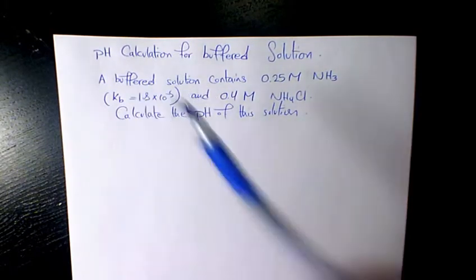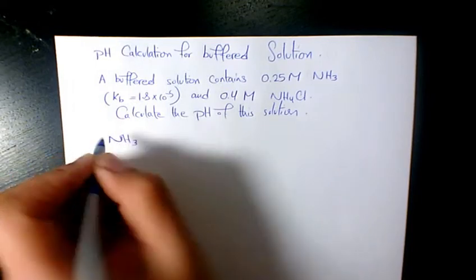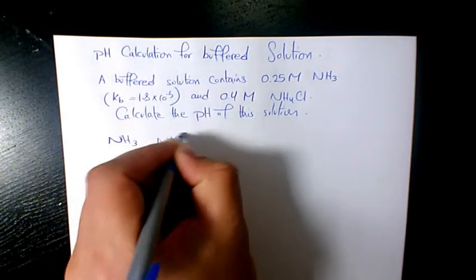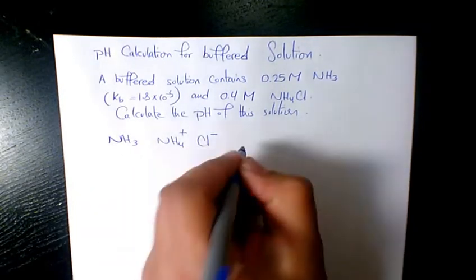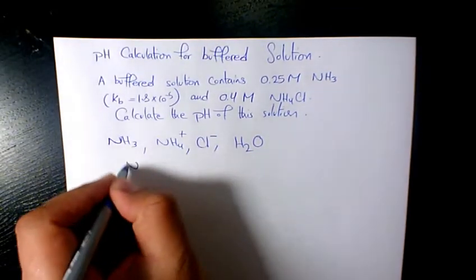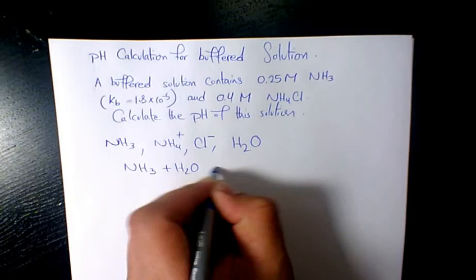In this example we have NH3 and NH4Cl is going to dissociate into NH4+ and Cl- and H2O. So these are what we have. When you have NH3 plus water, that's going to give us NH4+ plus OH-.